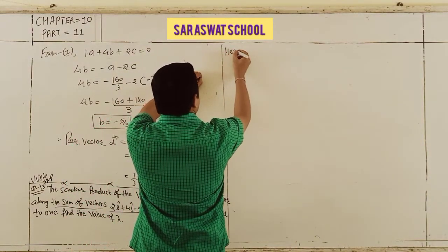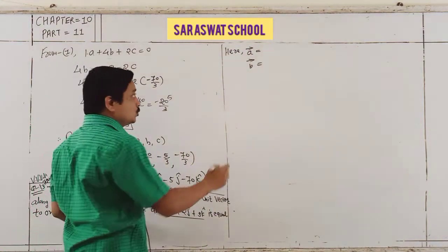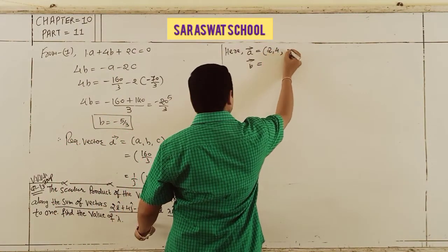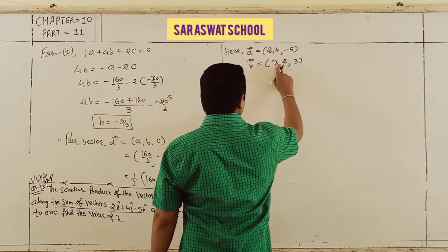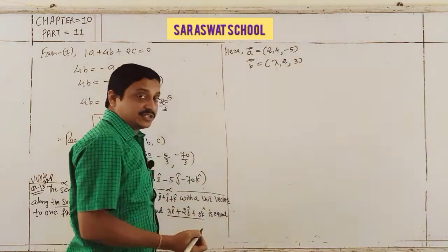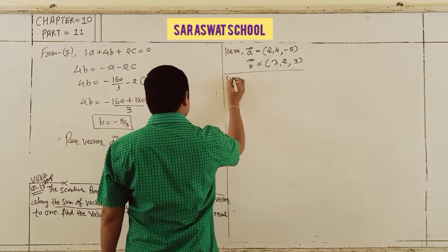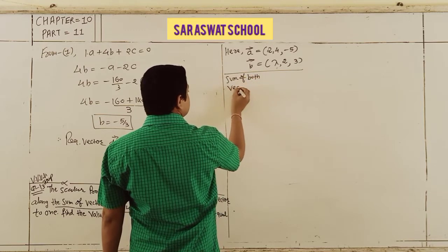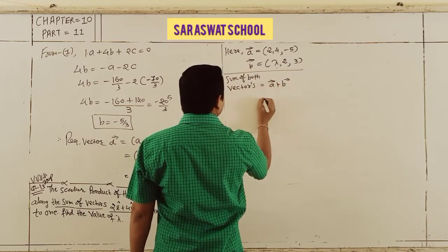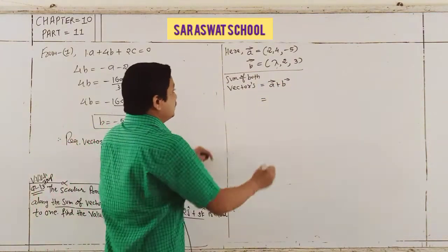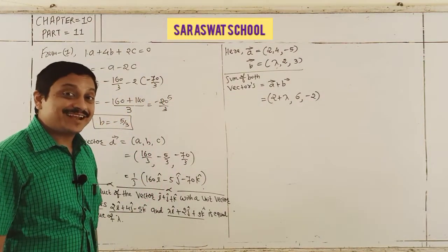Vector a = (2, 4, −5) and vector b = (λ, 2, 3). The sum a + b = (2 + λ, 6, −2). Now we find the magnitude: |r| = √[(2 + λ)² + 36 + 4] = √[λ² + 4λ + 4 + 40] = √[λ² + 4λ + 44].